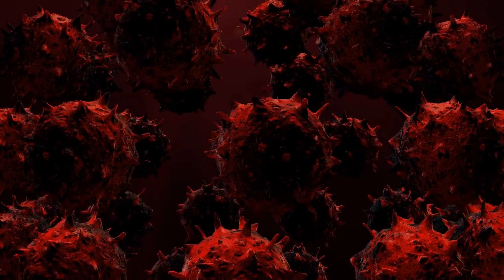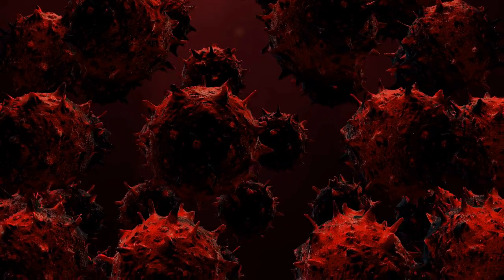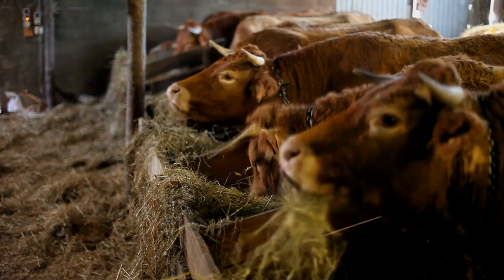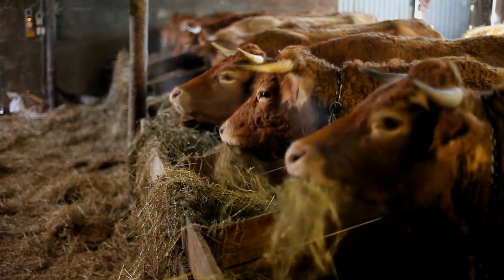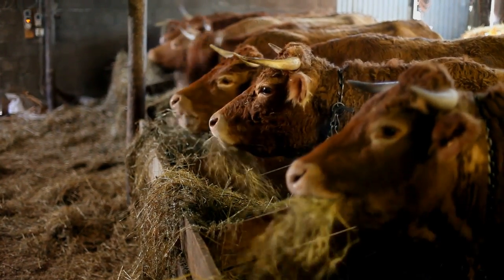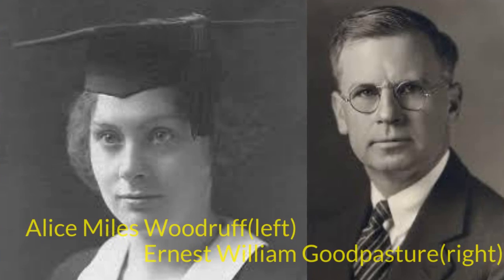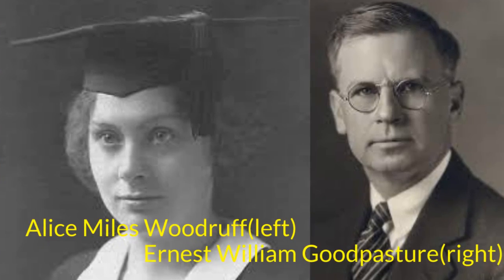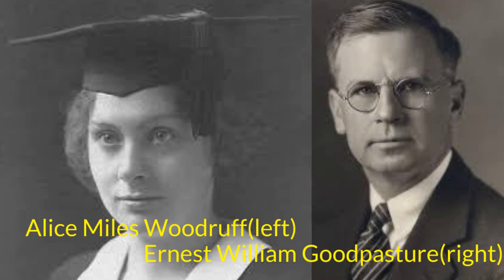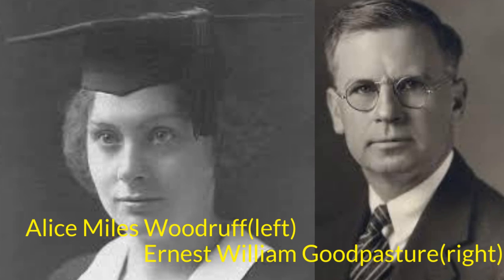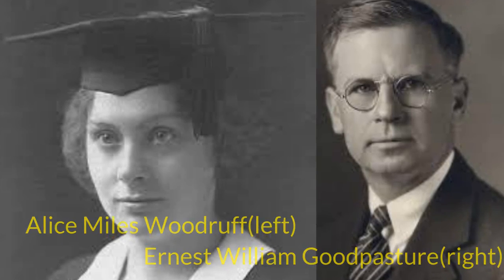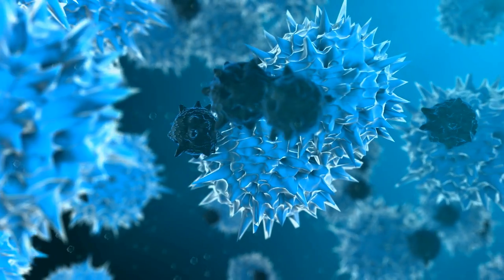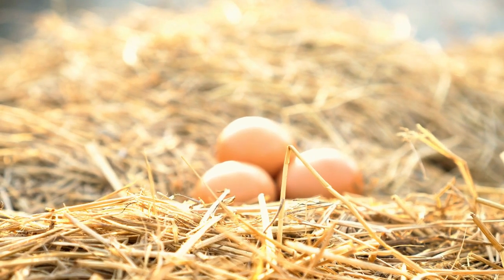A problem for early scientists was that they did not know how to grow viruses without using live animals. The breakthrough came in 1931, when American pathologist Ernest William Goodpasture and Alice Miles Woodruff grew influenza and several other viruses in fertilized chickens' eggs.